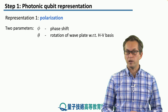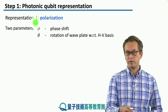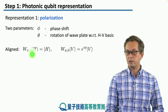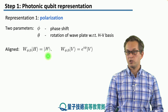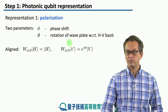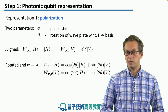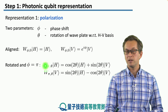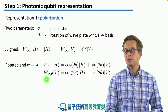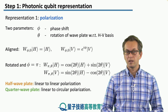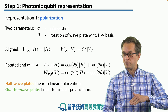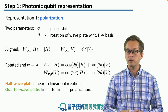Mathematically, we describe the wave plate using two parameters: phi, which controls the phase shift, and theta, which tells us about the rotation of the wave plate with respect to the HV basis. When theta is zero, the wave plate acts as identity on the horizontally polarized state and introduces a phase e to the i-phi on the vertically polarized state. If we set the phase shift to exactly pi, the theta parameter rotates the horizontally polarized state in the HV plane, and similarly rotates the vertically polarized state. Half wave plates allow us to transform linear to linear polarization, while quarter wave plates allow us to transform linear polarization to circular polarization.